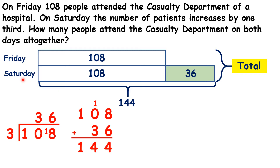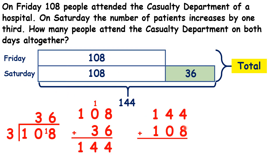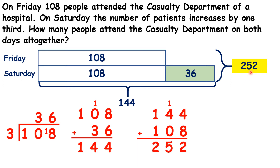So to find the total for the two days, we can add that to the number who attended on Friday. So that's 144 plus 108, which gives us a total of 252 for both days together.